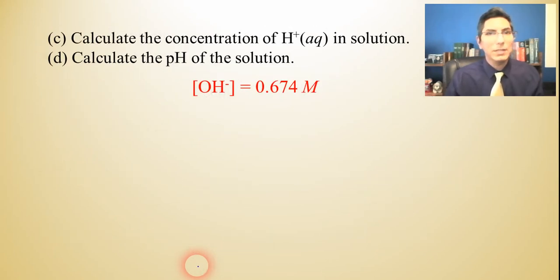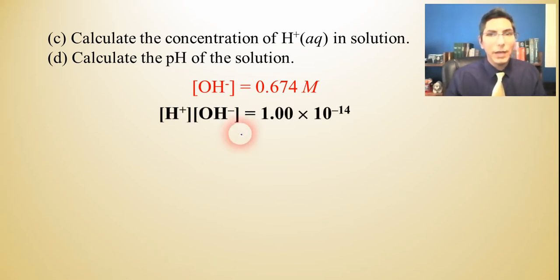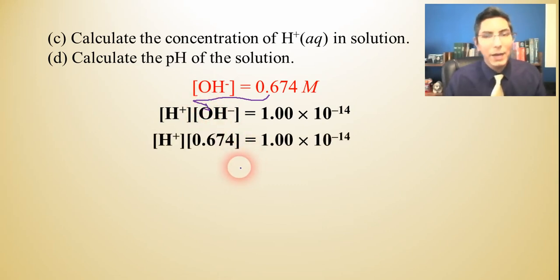How about part C? Let's find the H+ concentration. Well, if we know the hydroxide concentration, we can plug it into this equation. Our 0.674 is going to go in right here for hydroxide. Now we just have to take 1 times 10 to the minus 14th divided by 0.674, and we find that H+ equals 1.48 times 10 to the negative 14th molar.